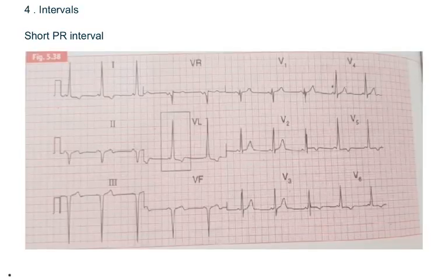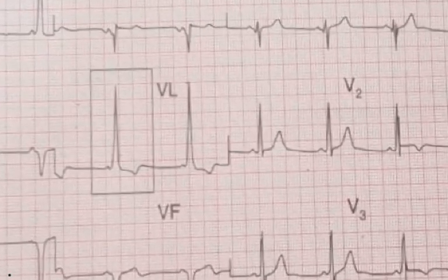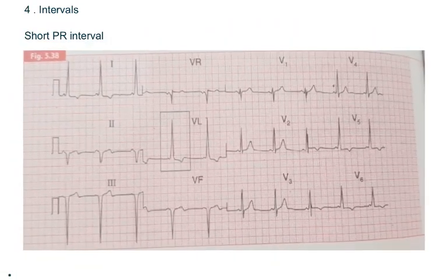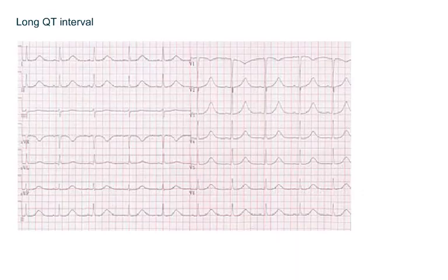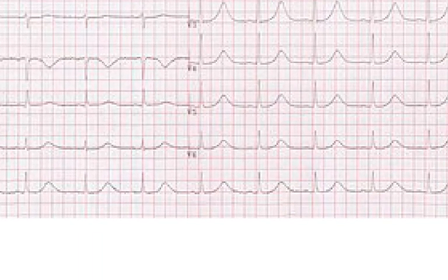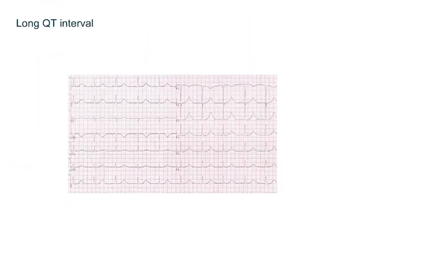The fourth step is to look at the intervals, that is PR interval and QT interval. Previously I mentioned that PR interval is normally 3 to 5 small squares. If you look at this ECG, the PR interval is literally just 1 to 2 small squares, so it is a short PR interval. This is an ECG of WPW syndrome. Normal QT interval is 9 to 11 small squares. In this ECG the QT interval is almost 3 big squares, which is 15 small squares, meaning this is an ECG of long QT interval.